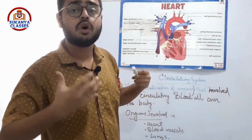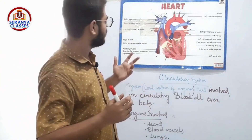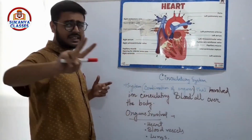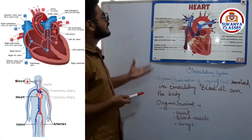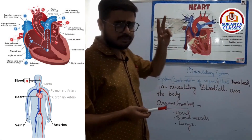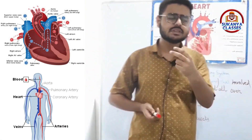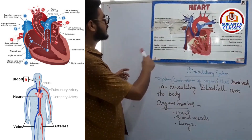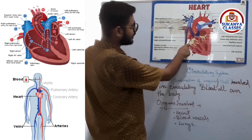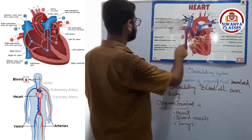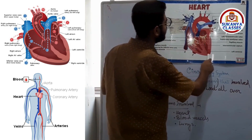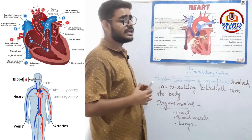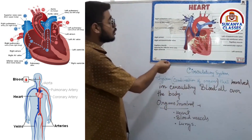Circulation is done by the heart. The heart basically has four chambers: the upper two chambers are called atria — right atrium and left atrium — and the lower two chambers are called ventricles — right ventricle and left ventricle.